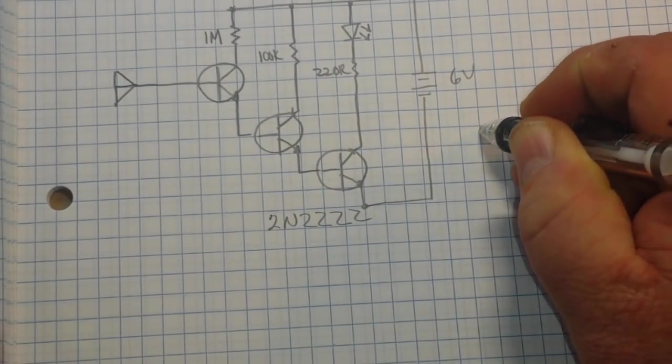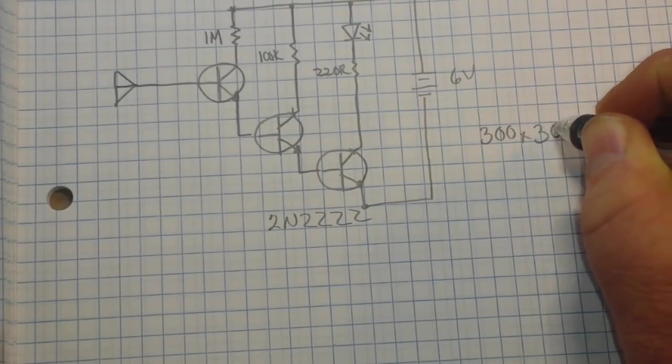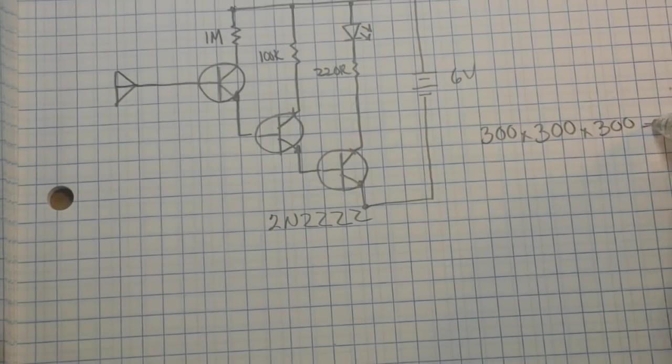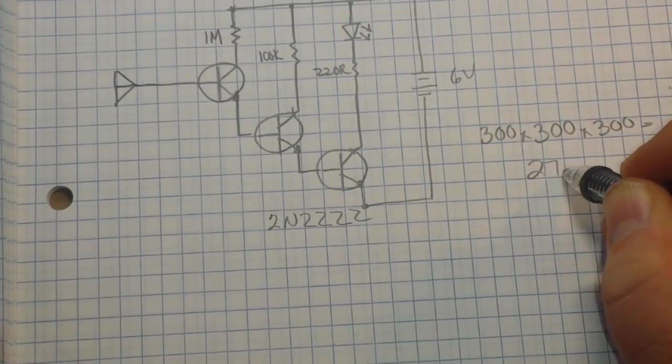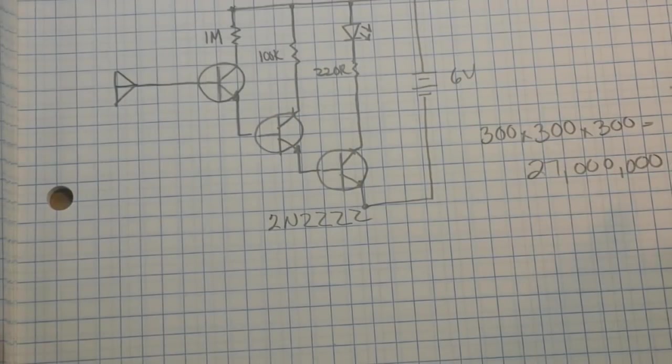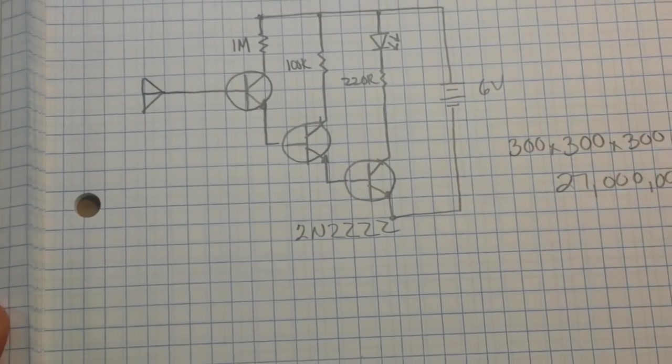That means the gain of our circuit is 300 times 300 times 300. That is 27 million times. That is an incredible amount of gain.